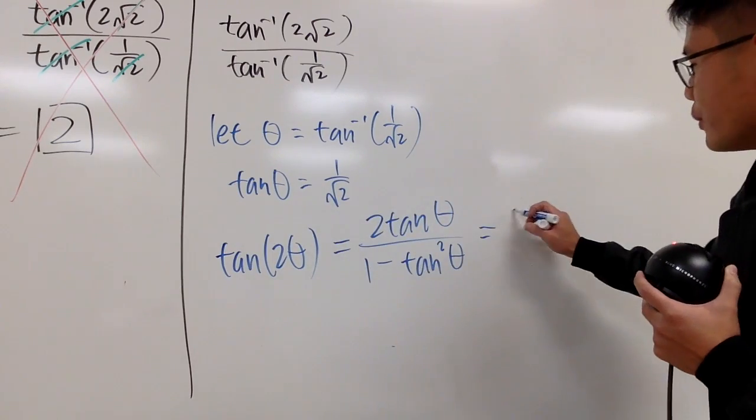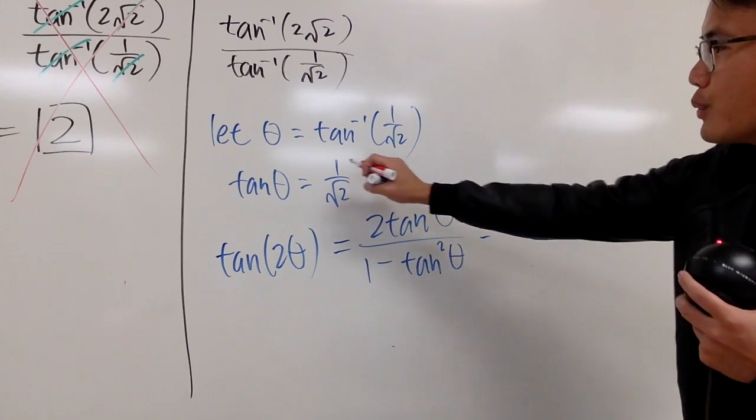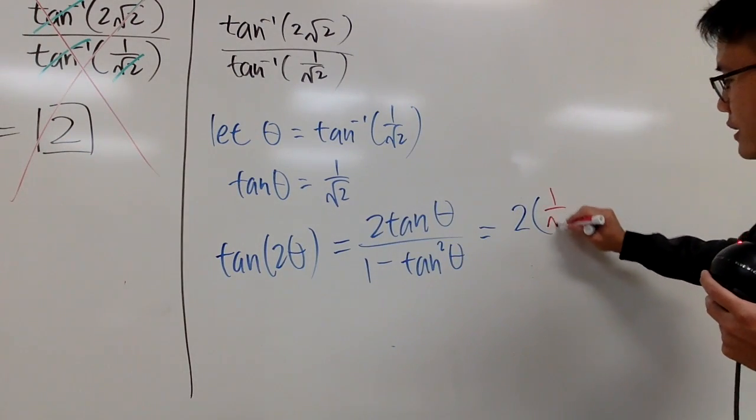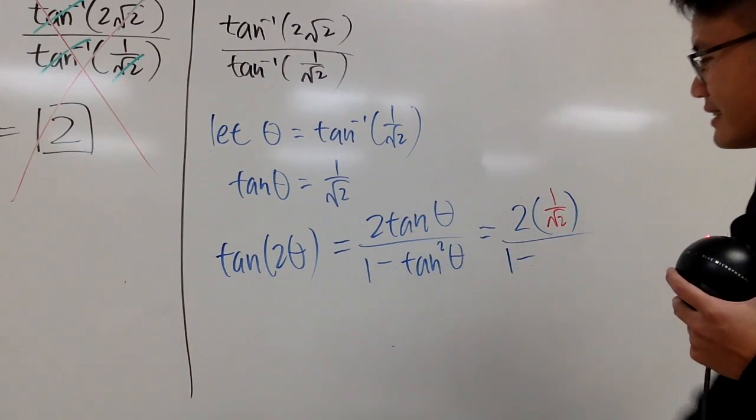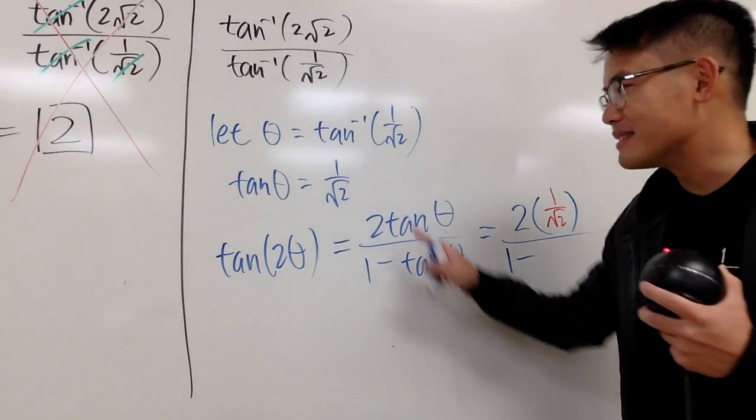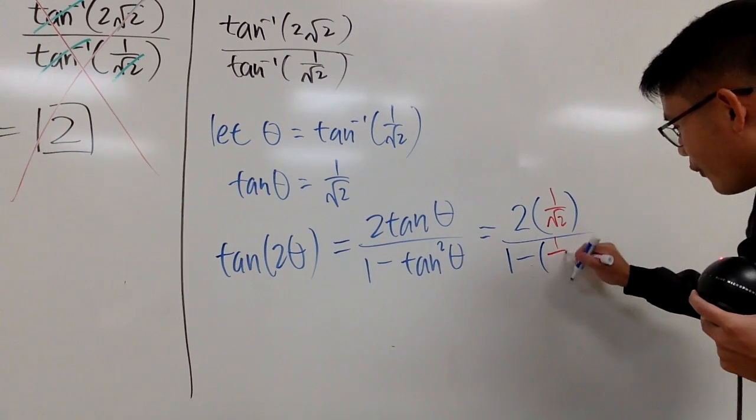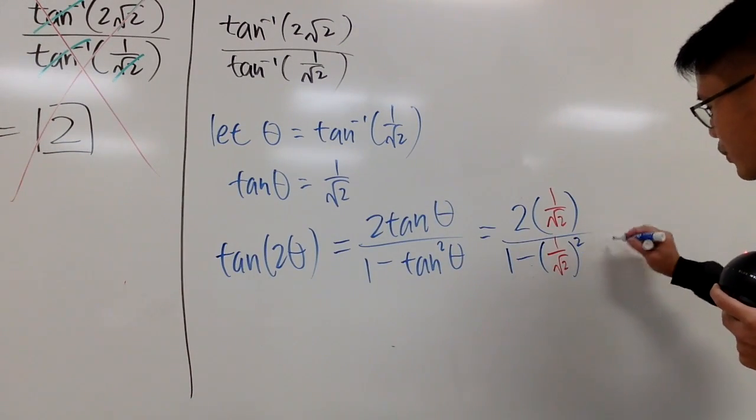And, as you can see on the top, we have 2 times tan(θ), which is 1/√2, over, on the bottom, we have 1, minus tan²(θ), means that we have to do 1/√2, and then you square that.